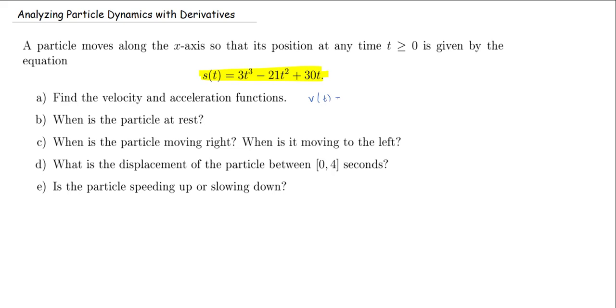The velocity function, v of t, is the derivative with respect to t of the position function. So in this case, the derivative is going to be 3 times 3 is 9t squared minus 2 times 21 is 42t plus derivative of 30t is 30. So there we found the velocity function.